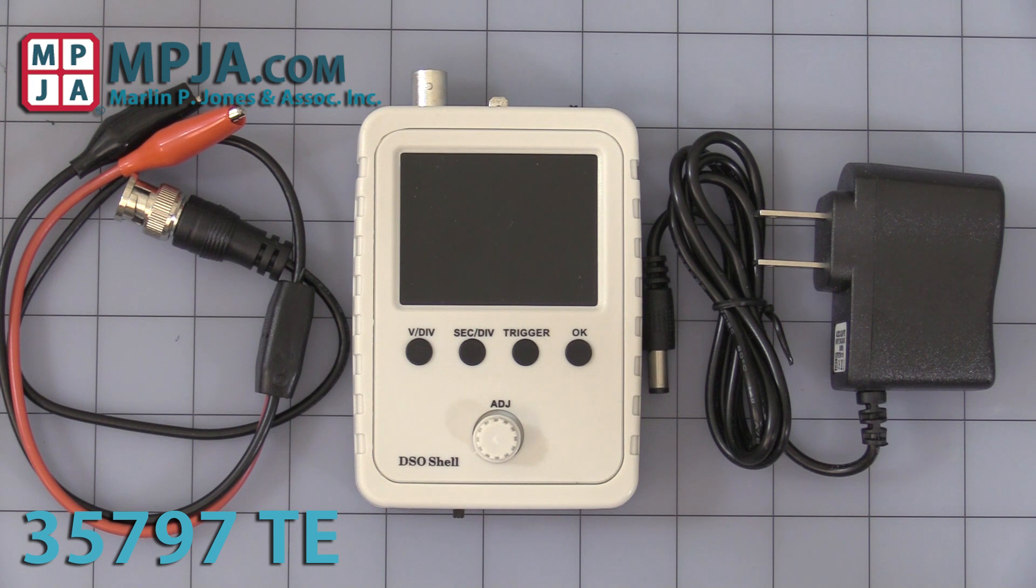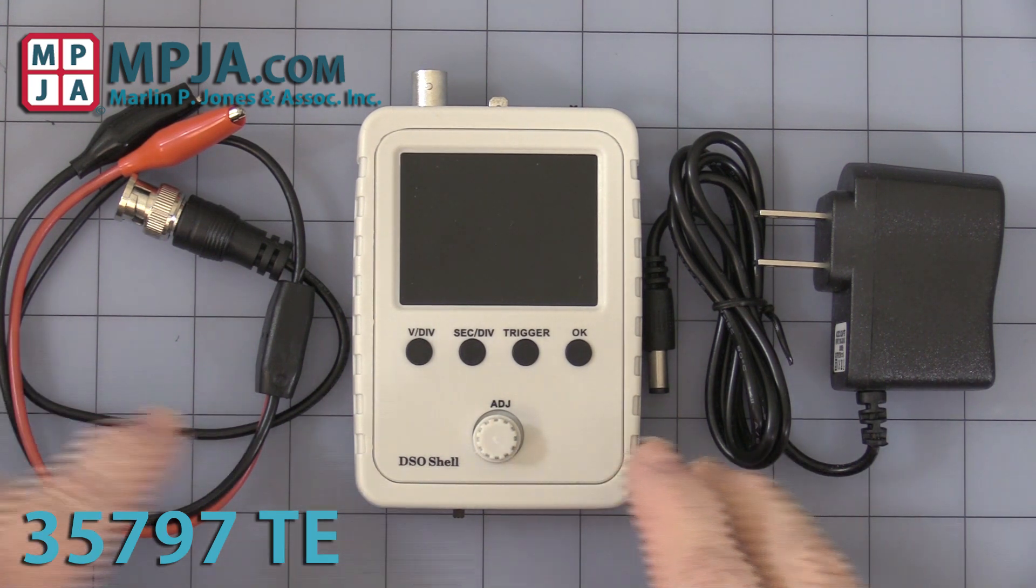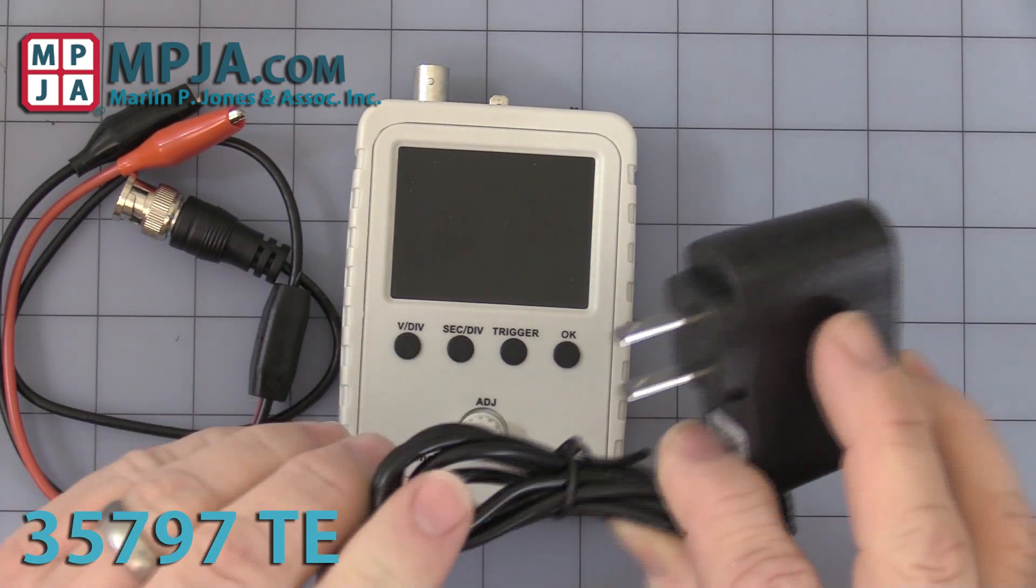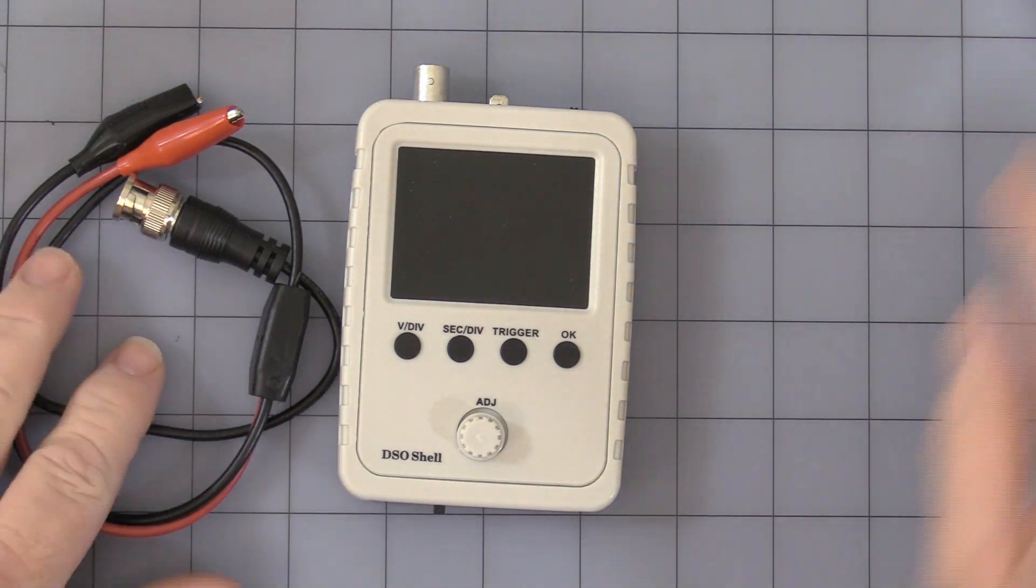Hello, today's video is on stock number 35797TE, the 200 kilohertz single channel scope. It comes with a plug transformer, very short lead, only about 32-33 inches long, but it does come with a plug transformer and a BNC to alligator clip probe.